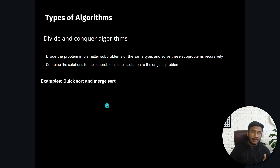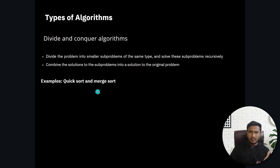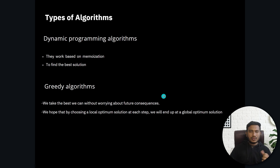Divide and conquer algorithm is nothing but dividing the problem into smaller sub-problems of the same type, solving these sub-problems recursively, and combining the solutions to the sub-problems into the solution to the original problem. This is the idea of divide and conquer. For example, quick sort and merge sort use this kind of divide and conquer algorithm.